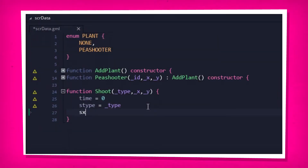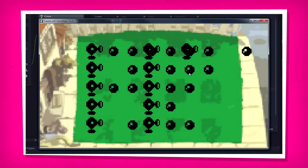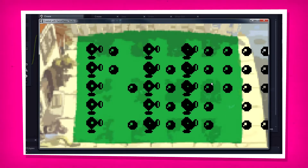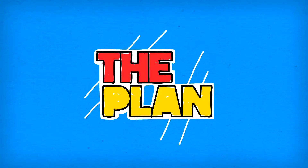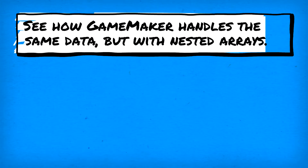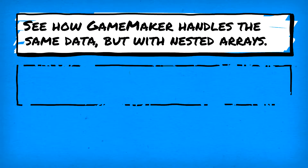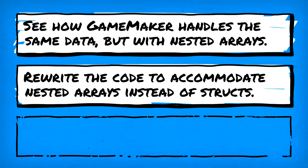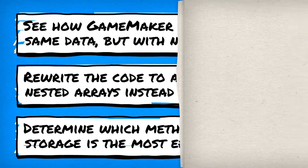And in a rare moment of spontaneous decision making, structs were implemented to keep track of plant data. Luckily the efforts were a success, however the results showed some concern in regards to the overall performance. Which brings us to today's plan. Before deciding to go with structs, I want to see how GameMaker handles the same data, only this time using nested arrays. This means rewriting the original code to accommodate this new approach, and hopefully by the end of the session we'll have a better idea of how GameMaker's new coding elements work under the hood.